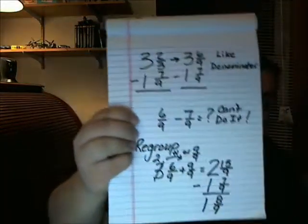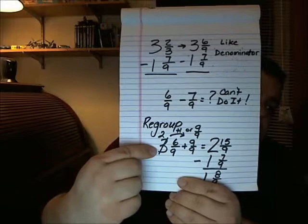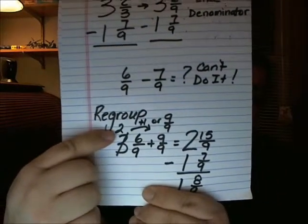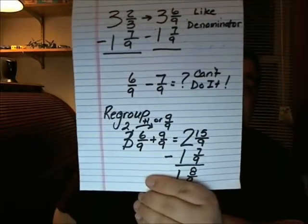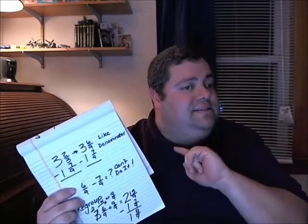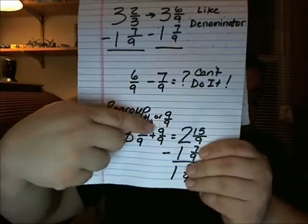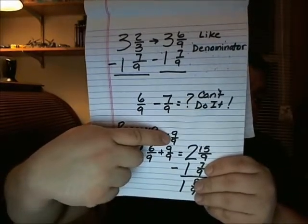I'm going to be borrowing from the whole number to increase the value of the fraction. What we're really saying is, since I can't do 6 minus 7, I need to borrow from my 3. As you can see here, I borrowed from my 3, which makes it a 2. I'm only borrowing one whole. The nice thing is, I can write the fraction for one whole as any number I want — as long as the numerator and denominator are the same, the value is 1. So 8 eighths is 1, 7 sevenths is 1, 9 ninths is 1. Since I needed ninths to begin with, that's what I changed everything to — I just made that one that I borrowed the fraction 9 ninths.